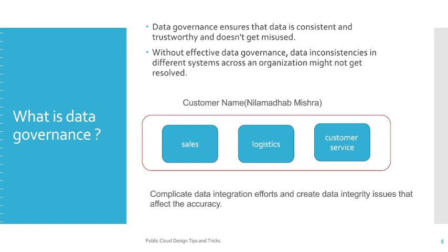So what is data governance? Data governance ensures that data is consistent and trustworthy and doesn't get misused across your organization. Without effective data governance, data inconsistencies in different systems across an organization might not get resolved. For example, you have a customer named Nilmadham Mishra and there are three different domains — sales, logistics, and customer service — where the customer name is stored in different formats like N Mishra, Nil Mishra, or Nilmadham Mishra. When you want to aggregate this data, it is very difficult to do so, creating inconsistency across different domains. To resolve this, a governance model should define the format that must be followed when storing a name. That is the basic fundamental of a data governance model.